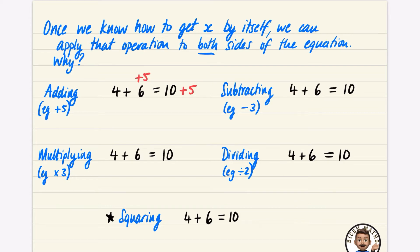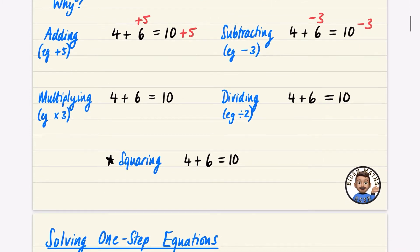For subtracting, if you just subtracted from one side, you'd have 4 plus 6 take away 3, that's 7, giving you 7 equals 10 — which is wrong. So obviously you need to subtract on both sides to keep it true. For the multiplying one, I'll try an example of multiplying by 3. If I multiplied 10 by 3 I'd get 30, so I need to multiply the whole thing by 3. One way is to put brackets around it and do 3 times that part. The alternative is to multiply each term by 3 — so I times that by 3, and that by 3, and that by 3.